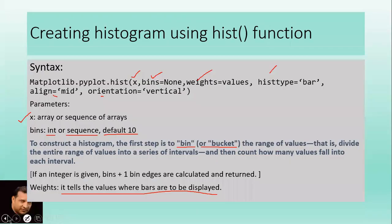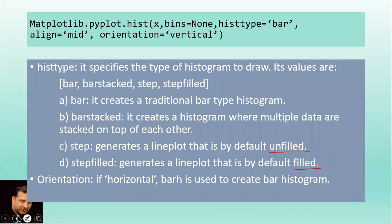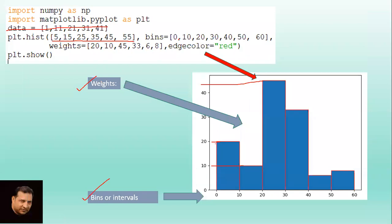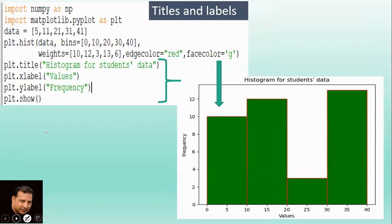See this line once again: if an integer is given, bins plus one bin extra is required. That is why here we have taken one bin extra. How many are these? One, two, three, four, five, six data points, but here bins are one, two, three, four, five, six, and seven - so there are seven bins.